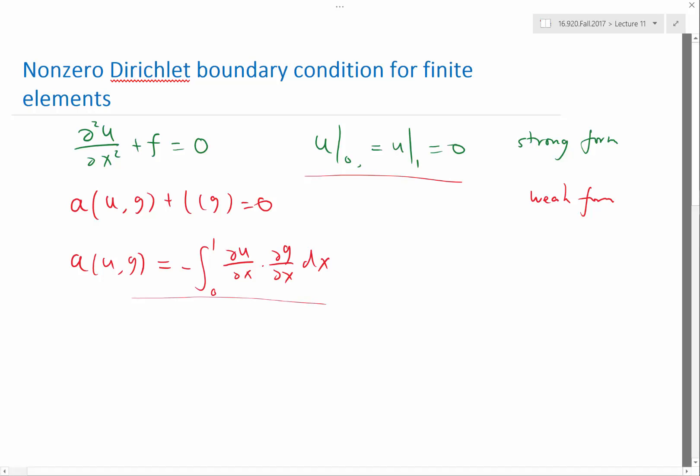The boundary condition is not actually included in the equation of the weak form itself, because neither a nor l actually knows about the boundary condition. Instead, what we are saying is that this is true for all g inside the space X, and where my u is also in the space X.